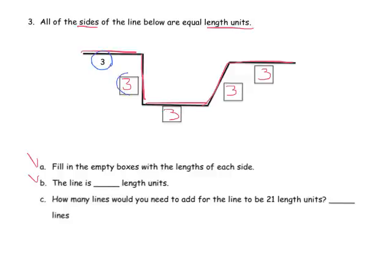So 1, 2, 3, 4, 5, 6, 7, 8, 9, 10, 11, 12, 13, 14, 15. So the line is 15 length units total.